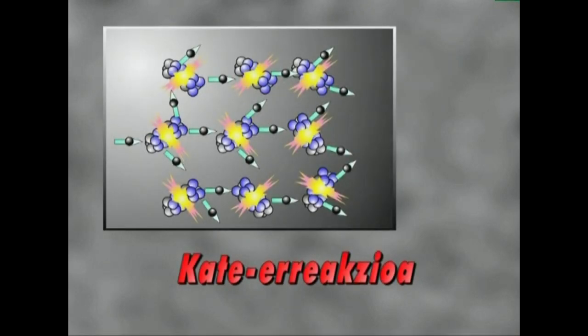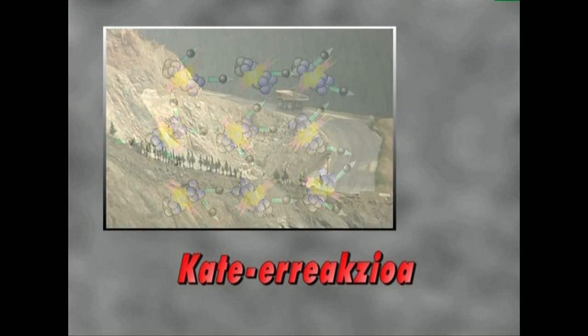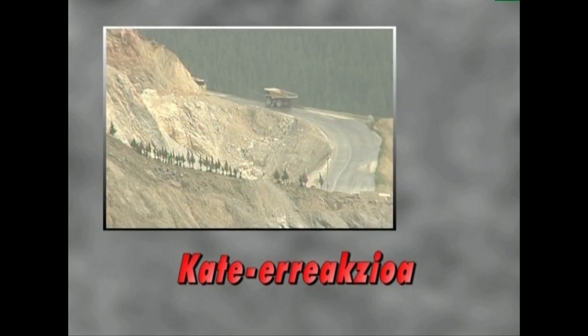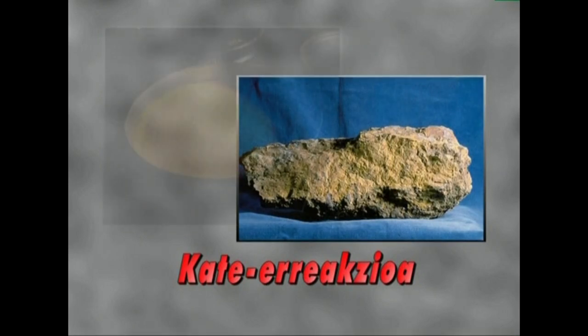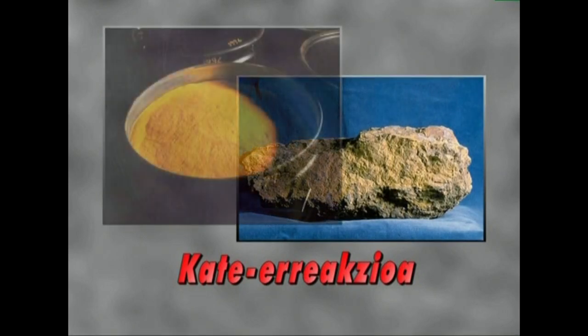Erreaktore gehienetan, kate erreakzio kritikoa lortua alizateko, erre gai nuklearrean uranio berreundau gehita amabost isotopoaren euneko jakin bat behar da, naturako uranioak duena baino haundiagoa. Hori lortzeko, aberaste prozesua burutu behar da.